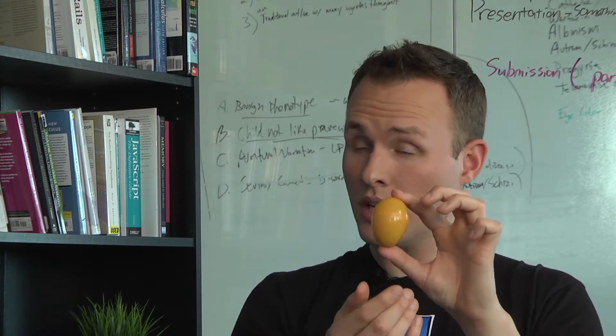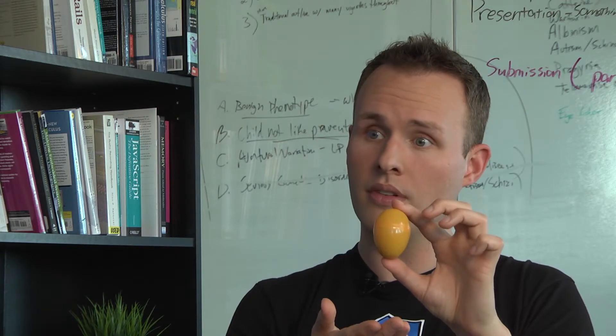So in this case, what color eyes do you think the offspring would have? Brown, since brown is the dominant allele. Exactly.